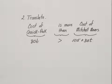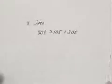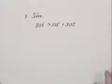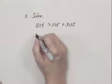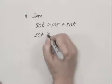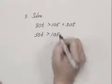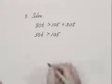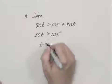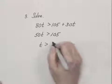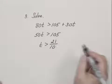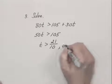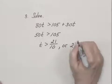In our solve step, we solve the inequality: 80t is greater than 105 plus 30t. We subtract 30t from both sides, giving us 50t is greater than 105. Then we divide both sides by 50, giving us t is greater than 105 over 50, which simplifies to 21 tenths, or written as a mixed number, 2 and 1 tenth.